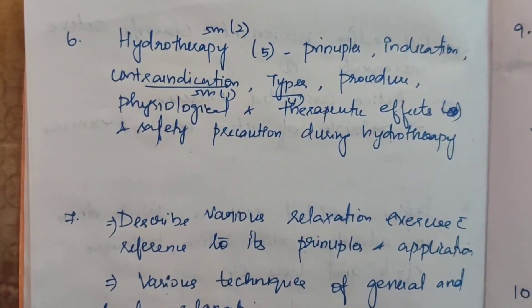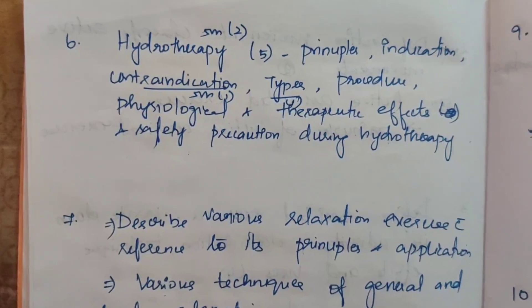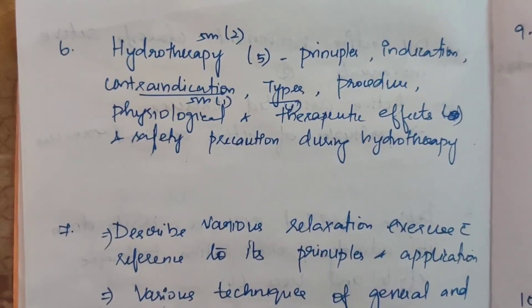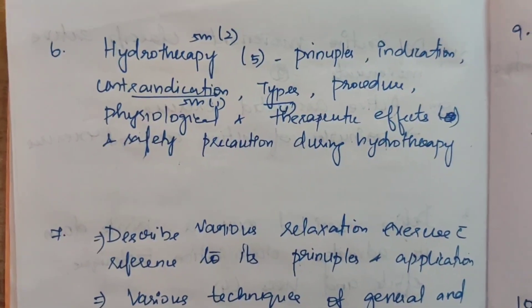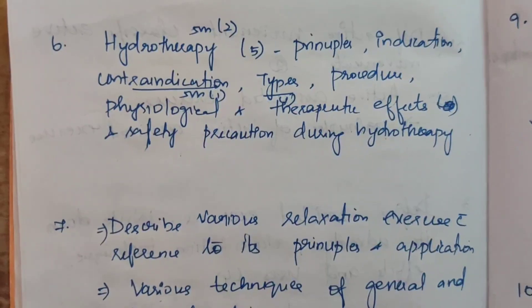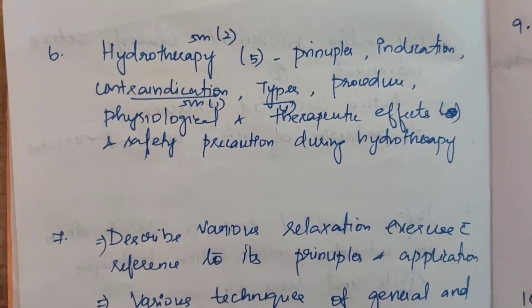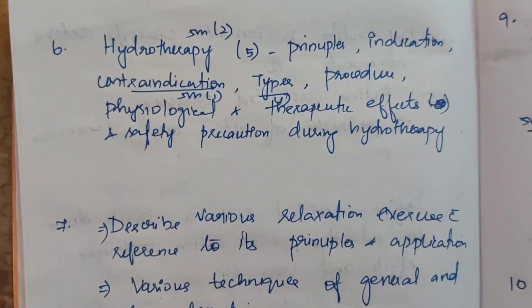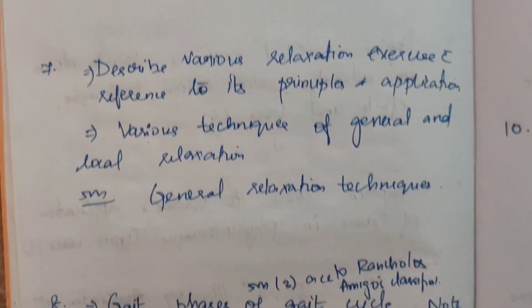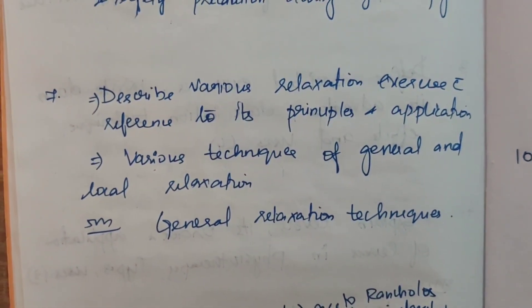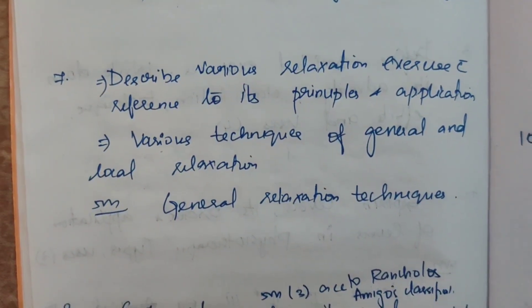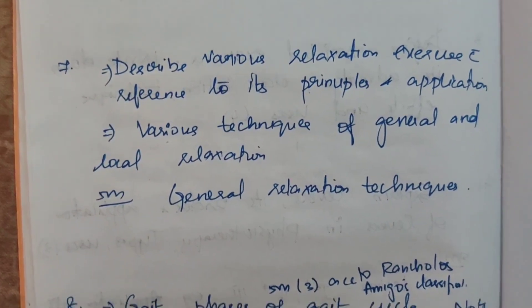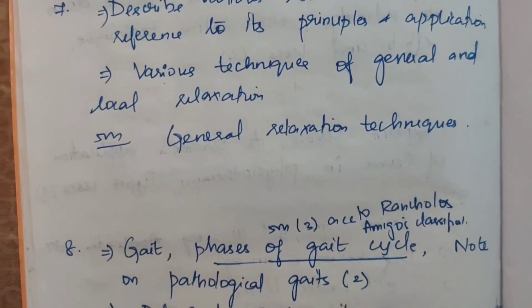Sixth topic is hydrotherapy-related — appears 5 times in 15-mark questions. Specific topics covered: principles, indications, contraindications, types, procedure, physiological and therapeutic effects, and safety precautions during hydrotherapy. In 5-mark questions, hydrotherapy appears 2 times, contraindications of hydrotherapy once, and types of hydrotherapy once. Seventh topic: describe various relaxation exercises with reference to principles and application — appears in 5-mark questions; general relaxation techniques also covered.